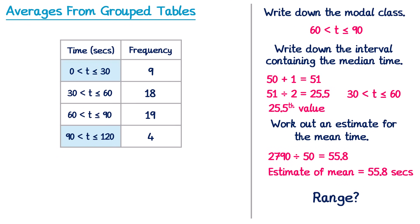We know the longest time from this table must be somewhere in between 90 and 120, but we have no idea where it's going to be. In a similar way we know the lowest time is going to be between 0 and 30, but again we don't know what it's going to be. So when you have a grouped frequency table, it's not really possible to calculate the range.